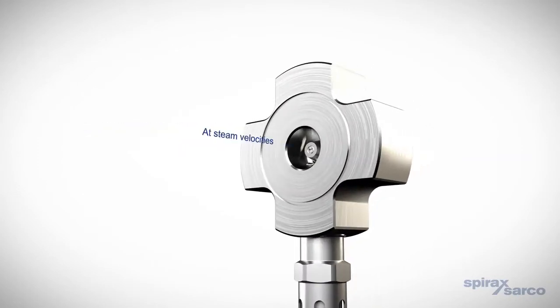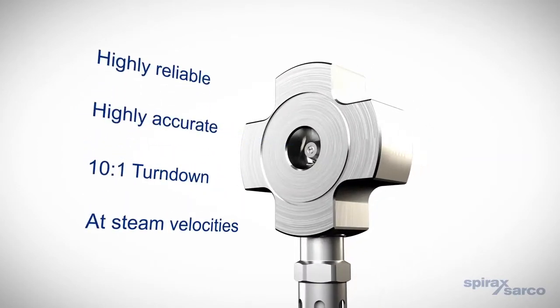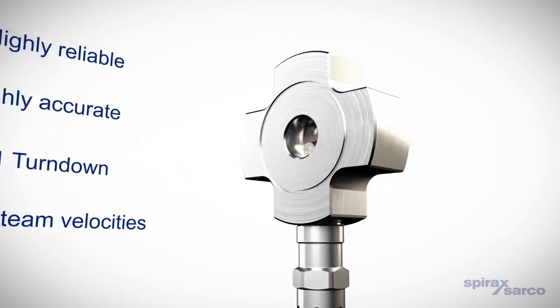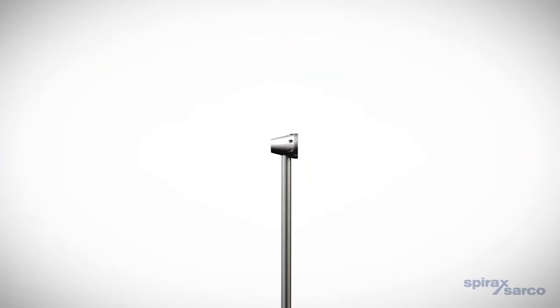This innovative target fixed area flow meter is designed exclusively for steam, giving it outstanding performance and accuracy with a 10 to 1 turndown at steam velocities. The TFA's unique target fixed area design has no moving parts, giving greater reliability and reduced maintenance requirements.